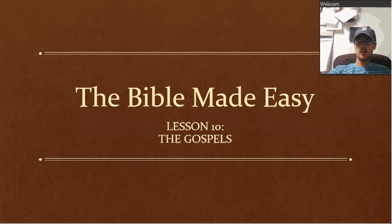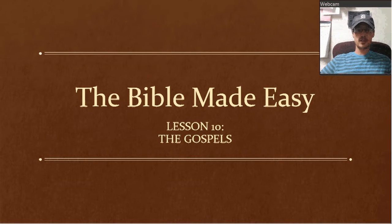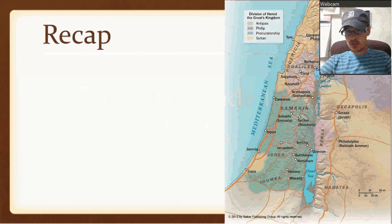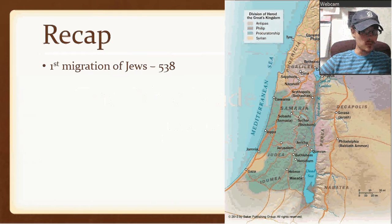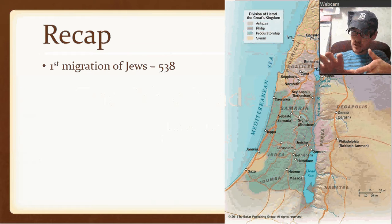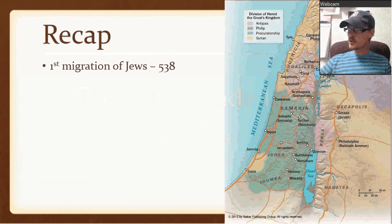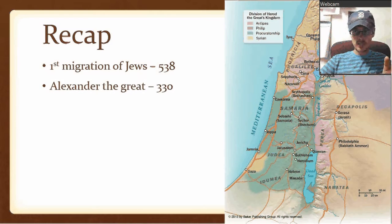That takes us to Lesson 10, which is the start of the New Testament. There's really a lot of stuff going on, and I'm trying to just condense it into small, manageable pieces. So just a little bit of a recap before we get going. I think it was Lesson 2 where we talked about a brief history of what was going on with the Jews through the Old Testament and then in that period between the Old and New Testament. Right now, I just want to show what's going on at the start of the New Testament.